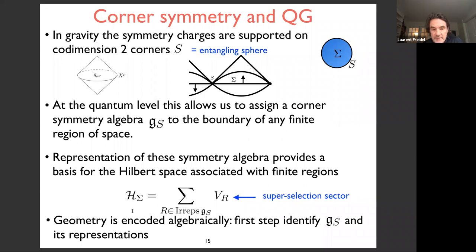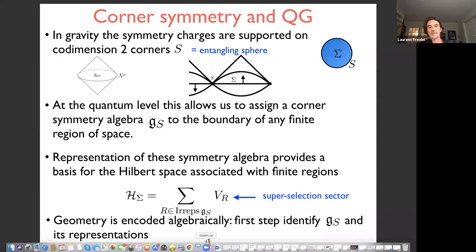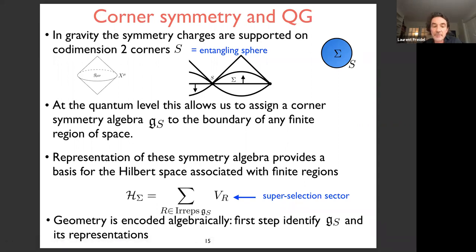Because this symmetry group is attached to regions of space, every observable and every type of measurement carries a representation of this corner symmetry group. Classifying the representations of this symmetry group provides a basis for the Hilbert space associated with finite regions. The Hilbert space decomposes as a sum of representations of the corner symmetry group — the labels of the representations are super-selection sectors. Geometry is therefore encoded algebraically through these symmetries and representations.